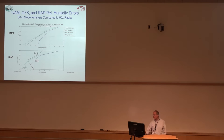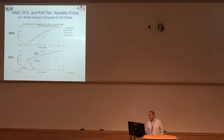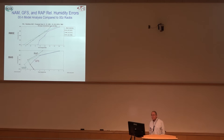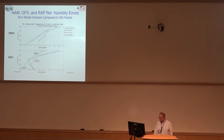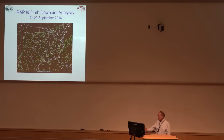Looking at relative humidity — root mean square errors — we tend to see errors of 10% or greater difference between what the model has at zero-hour at the radiosonde site and what the radiosonde actually shows. So the model analysis may not be the way you would analyze the data if you were doing an upper air chart. Here's a case from September 2014, but things haven't changed much.